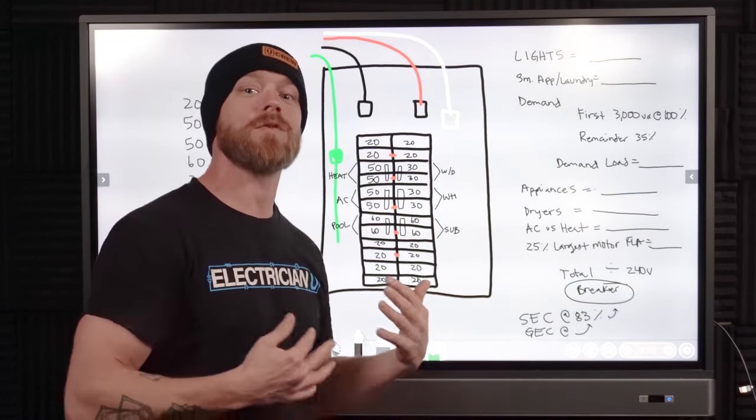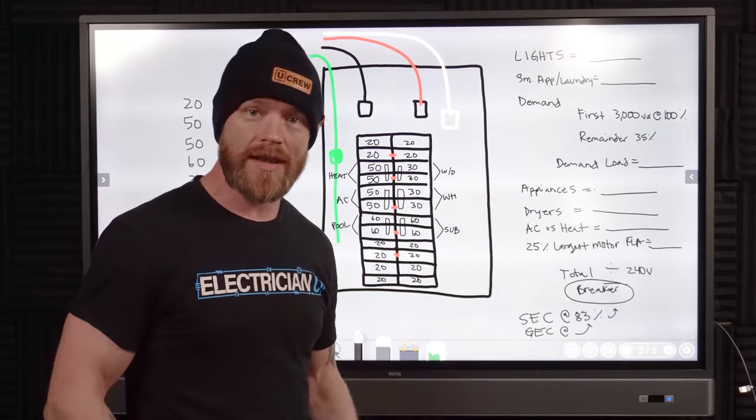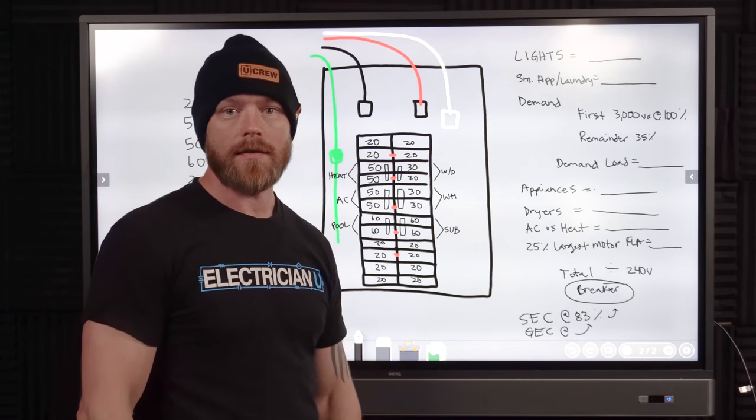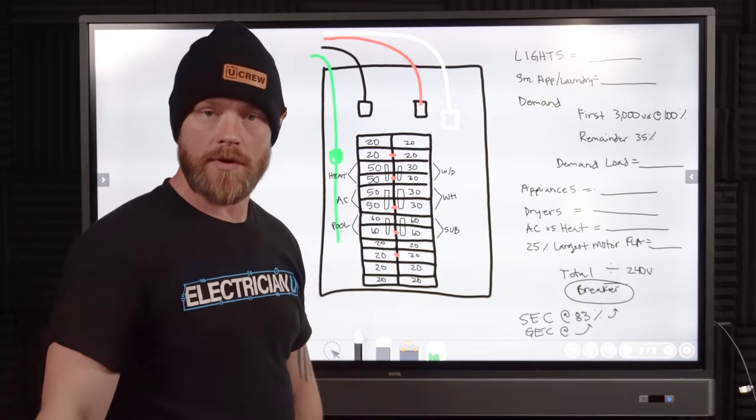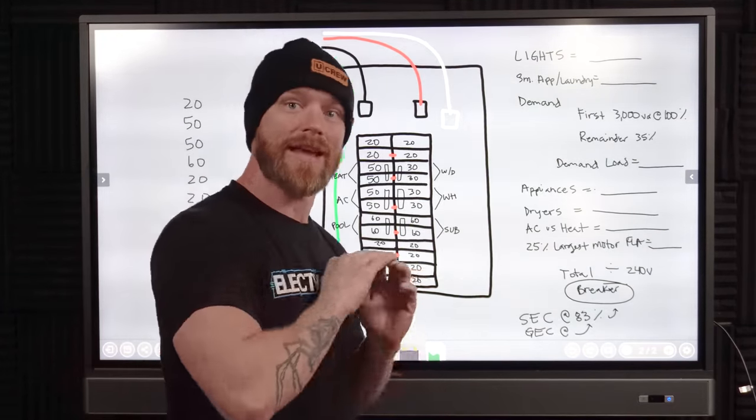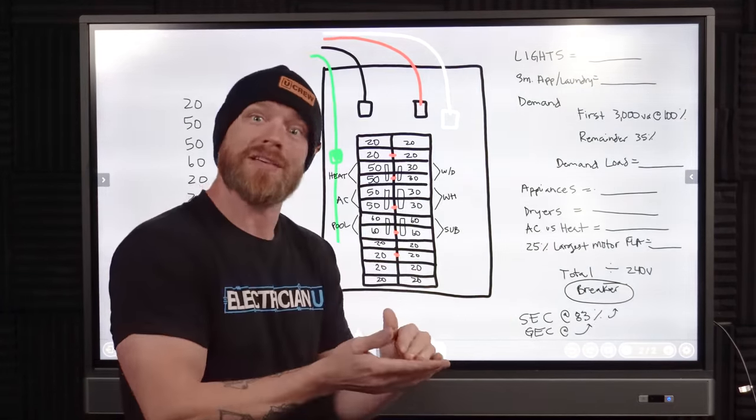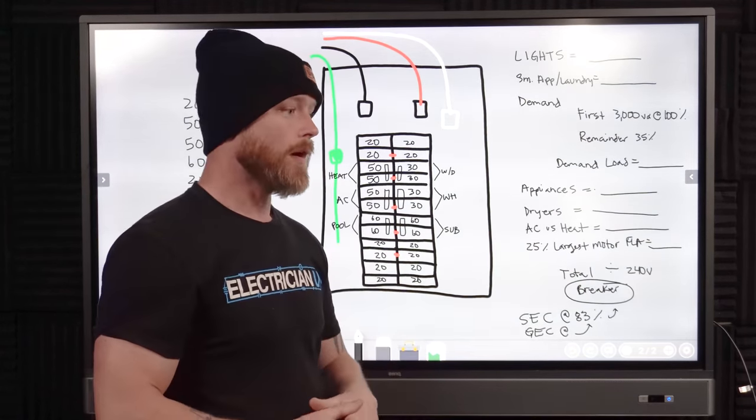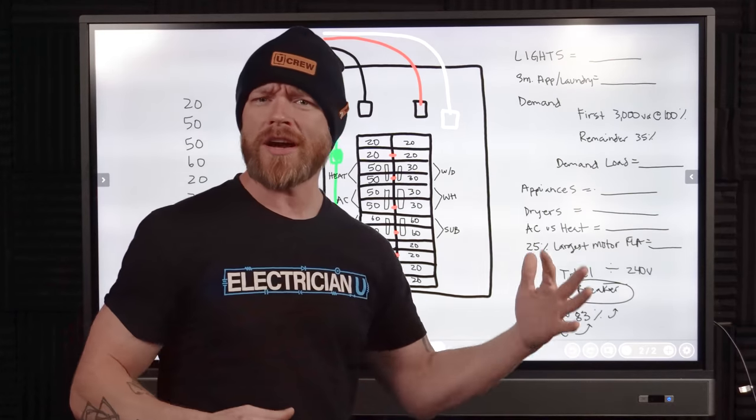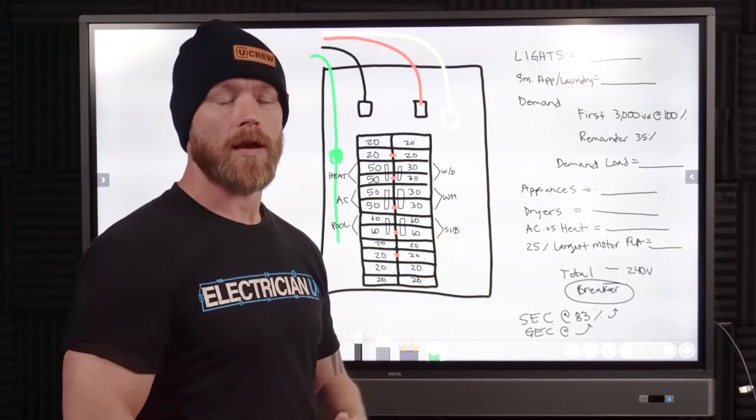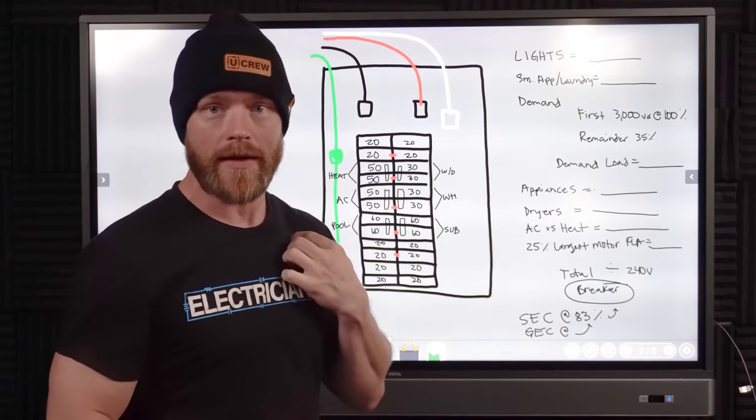Not every one of these things are going to be running at the same time. And so code allows us to de-rate things with the understanding that every once in a while we're going to be doing some drying clothes, every once in a while we're going to be cooking. There are some loads that are going to be running constantly at all times. So those ones we actually have to kind of bump up. We have to do 125% of that load if it's a continuous load.